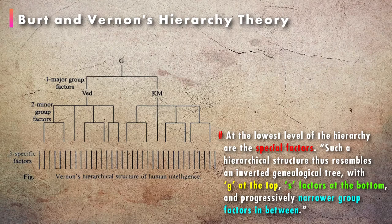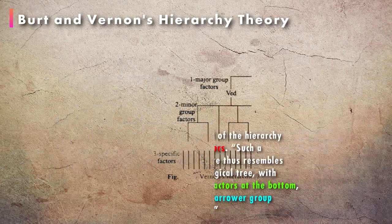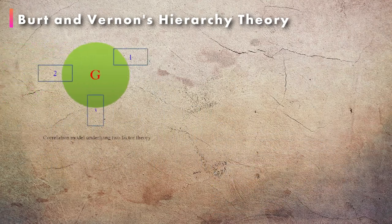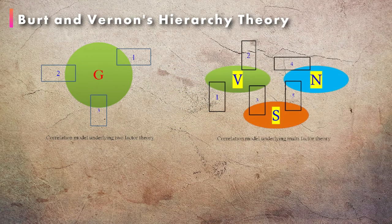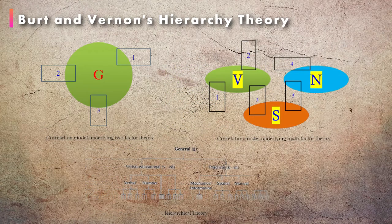Such a hierarchical structure resembles an inverted genealogical tree, with g at the top, s-factors at the bottom, and progressively narrower group factors in between. The graphical representation of Spearman's two-factor theory, the multi-factor theory, and the hierarchical theory showing correlated tests is given below.